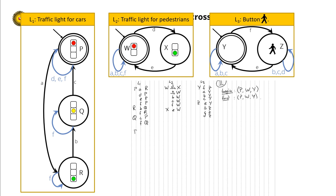In P, W, Y, I can do an A. In P, doing A leads to R; in W, doing A leads to W; in Y, doing A leads to Y. Action D is not allowed in Y, so I can't do it. E is not allowed either. F is the only other allowed action. So I can do an F: P leads to P with F, W leads to W with F, and Y leads to Z with F.